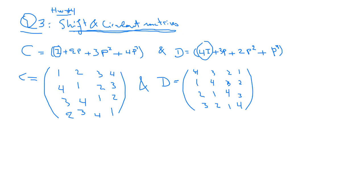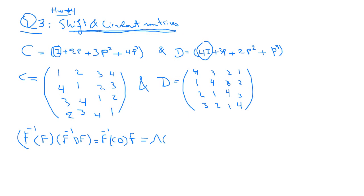What we are asked to show is that F inverse C F times F inverse D F is equal to F inverse CD F, which should give you the product of the eigenvalue matrix of C by the eigenvalue matrix of D.